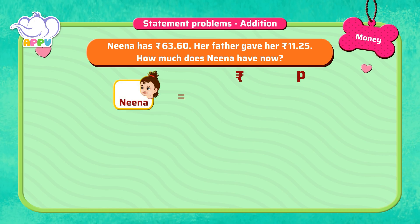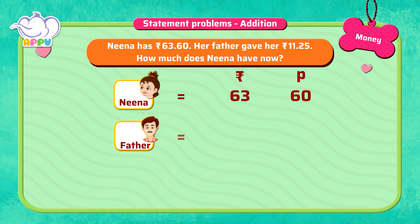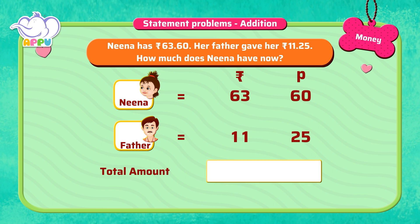We know Neena has 63 rupees 60 paise and her father gave her 11 rupees 25 paise. To find the total amount Neena has, we need to add 63 rupees 60 paise plus 11 rupees 25 paise. Let's add the paise first.